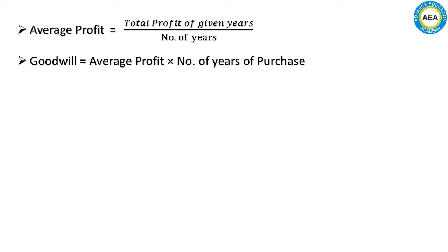So to find goodwill using this method, we first find the average profit, and then we find the goodwill. Let's look at an illustration.